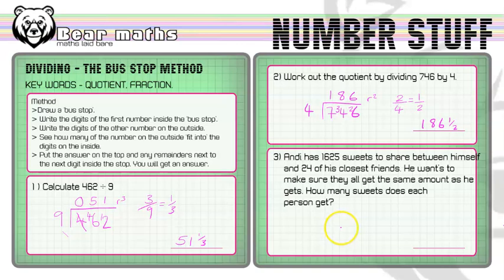And then in number 3, we've got Andy again. He's doing some things this time. And the word has gone out of the box a little bit. That's a bit annoying. I hadn't noticed that. Never mind. So Andy has 1,625 sweets to share between himself and 24 of his closest friends. He's a very popular guy, Andy. He wants to make sure they all get the same amount as he gets. How many sweets does each person get?